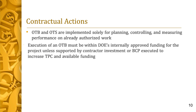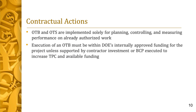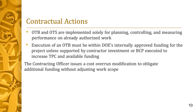Note, as explained later in this snippet, setting BCWS and BCWP equal to ACWP is not a preferred option because the historical efficiencies go away with the elimination of the variances. We can see on the graphic that the baseline to accomplish all authorized work extends well over the contract budget base, as well as beyond the contract completion date. The OTB and OTS are implemented solely for planning, controlling, and measuring performance on already authorized work. The contractor's execution of an OTB must be affordable and within the customer's internally approved funding for the project, unless supported by contract investment. The determination of the OTB value by the contractor does not require current funding to be in place before approving or implementing an OTB and/or OTS.